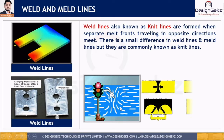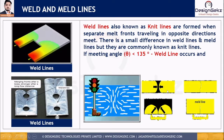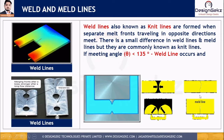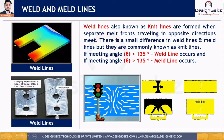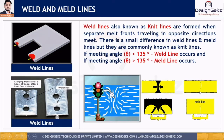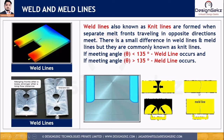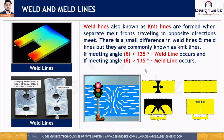There is a small difference between a weld line and a melt line, and they are commonly known as neat lines. It all depends on the angle at which the flow fronts meet. If the meeting angle is less than 135 degrees, a weld line will occur. If the meeting angle is greater than 135 degrees, a melt line will occur. Both are commonly known as neat lines, but the weld line has higher intensity compared to the melt line, which has lower intensity.